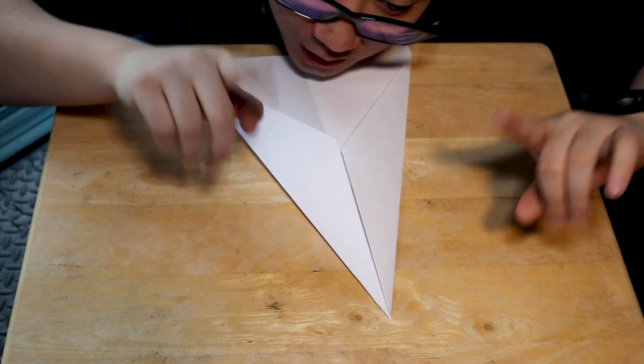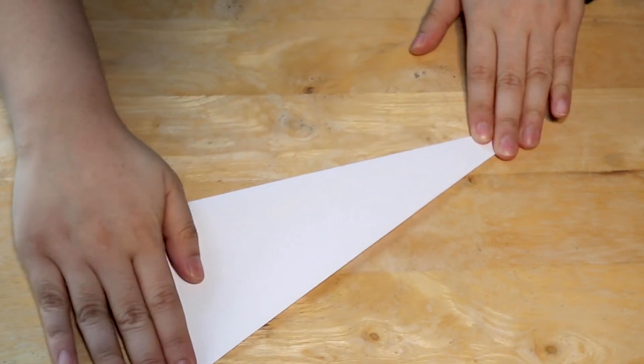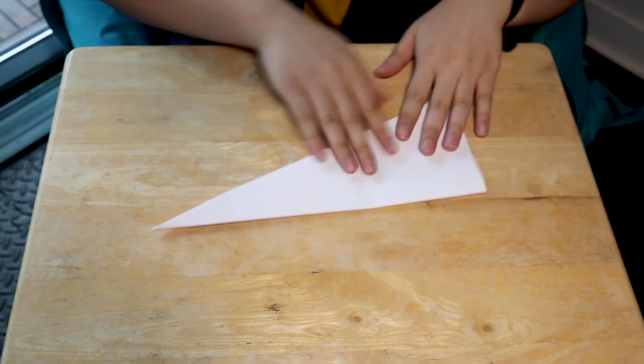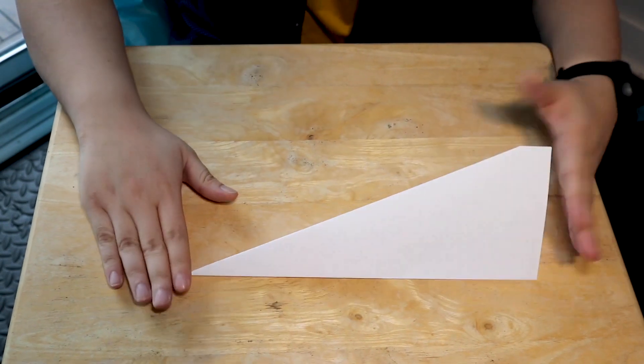Okay. Now we're going to fold it in half. Ooh! Like that. So it looks kind of like another triangle! And now comes the final part.